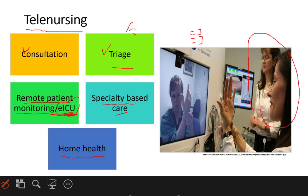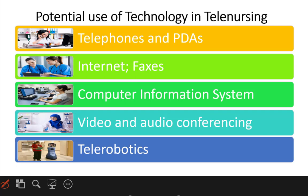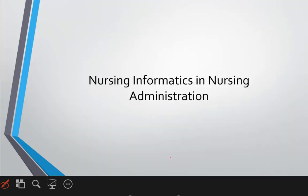For triaging, telenursing helps decide which area a patient needs to be sent to and what the emergency is. For specialty-based care, such as a cardiac emergency, specific symptoms and steps need to be predefined — it has a lot of scope but we need to be careful how we use it. Technological uses in telenursing include telephones, PDAs, used even by ASHAs and Anganwadis, internet and computer information systems with regular feedback, video or audio conferences, and even tele-robots currently being researched.